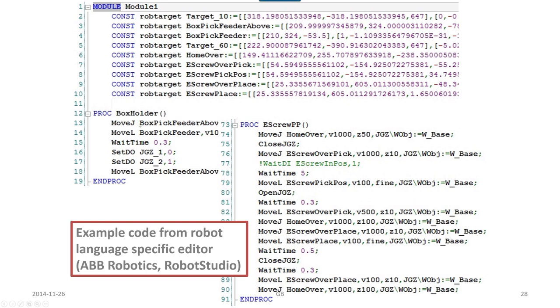We have a move J with a joint interpolation mode. We have move L as a linear interpolation mode. We have wait time 0.3 seconds. We have an output setting of a digital output to the value of 0 and then value number 2 to 1 and so on.